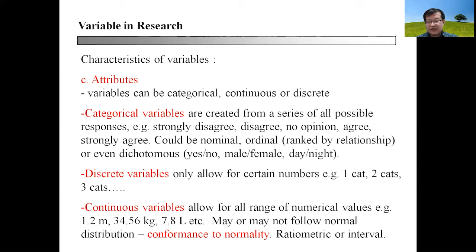Continuous variables allow for all range of numerical values, for example, 1.2 meters, 34.56 kilograms, 7.0 liters, and so forth. One key attribute is that they may or may not follow normal distributions, an important part that we shall be discussing later on conformance to normality.